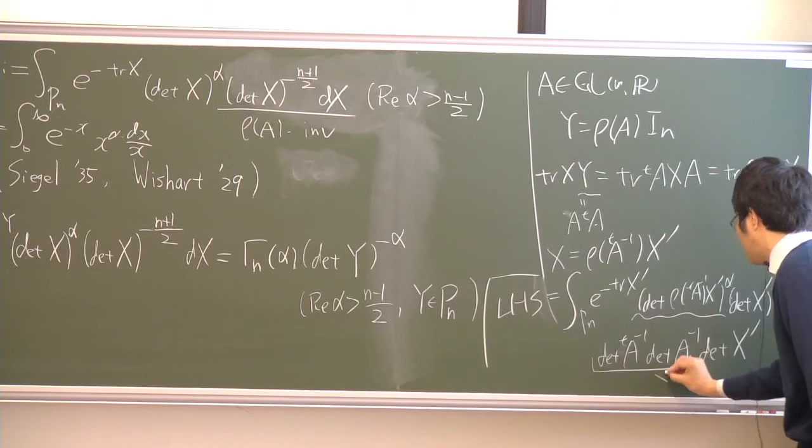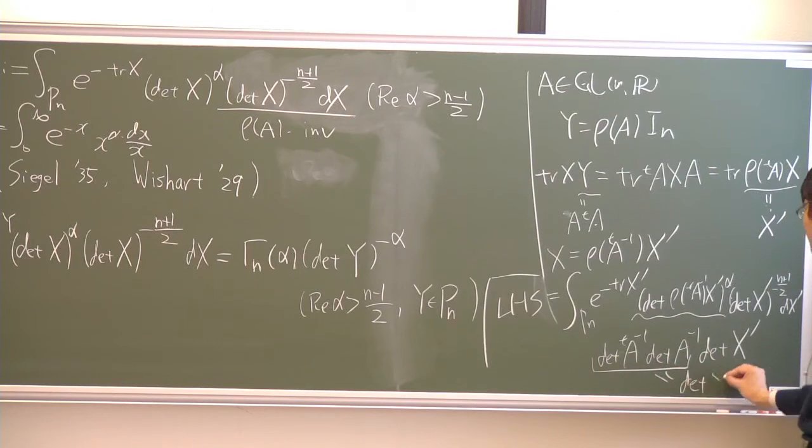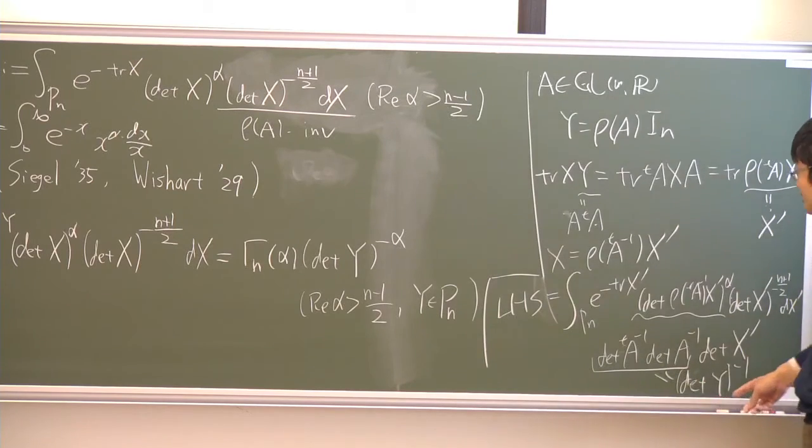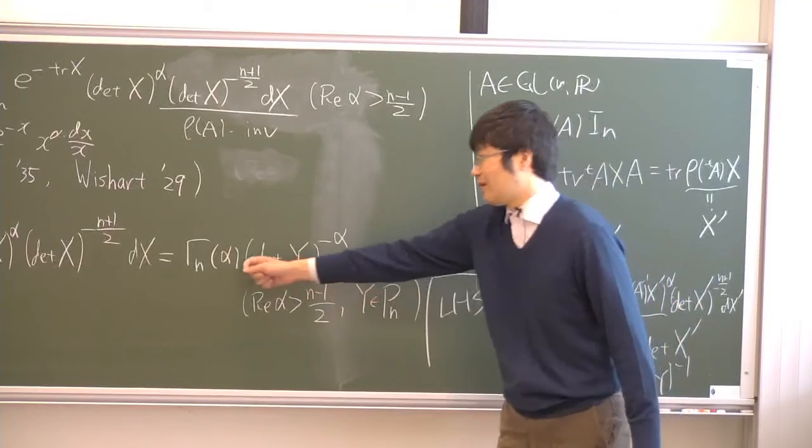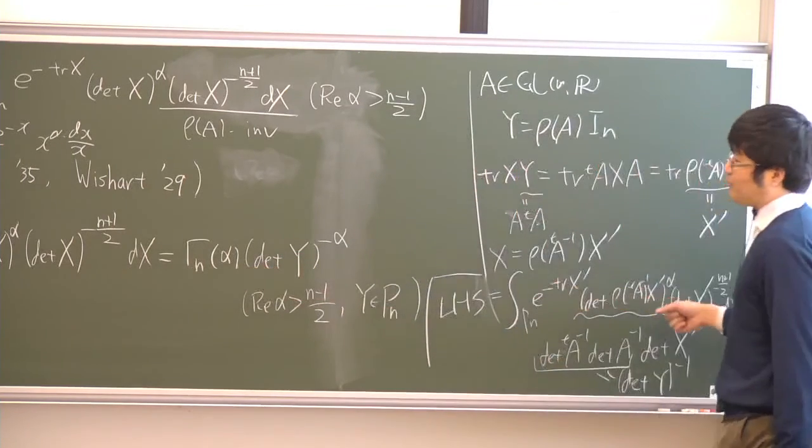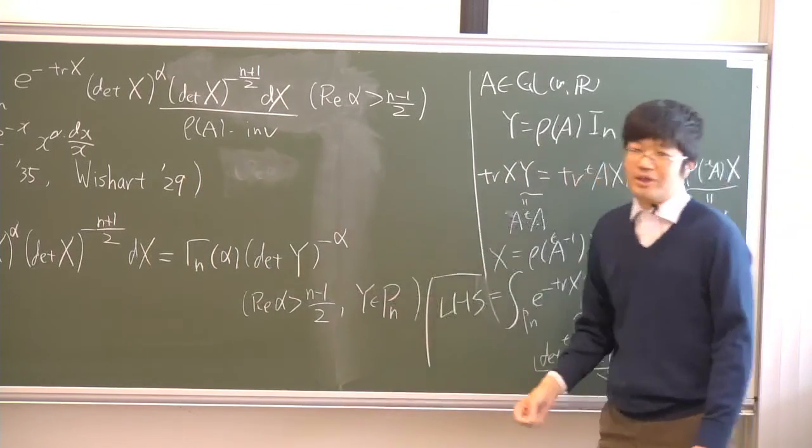And this becomes determinant Y inverse. So in this way, determinant negative power is factored out. So we can prove this Ziegler integral formula in this way.